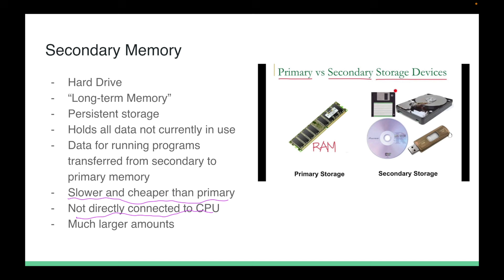RAM comes in increments like 2GB, 4GB, 8GB, or 16GB, but hard drives you're more likely to see in increments of 512GB or a terabyte. Secondary memory is generally slower but present in much larger amounts than primary memory.